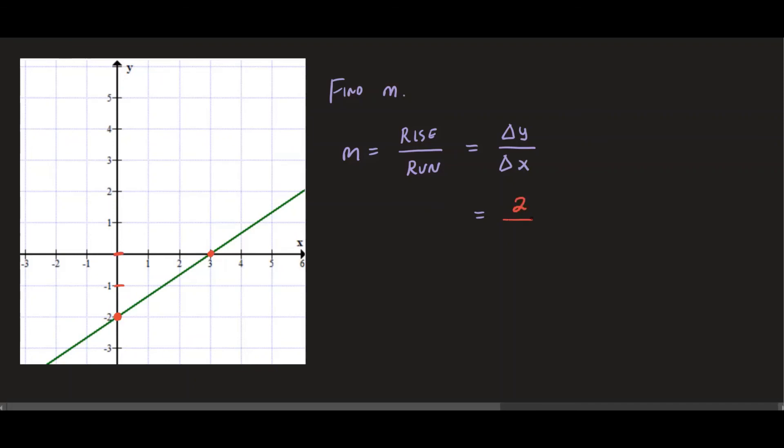So my rise happens to be going up. So that's two units positive. And now for run, I'm going to go from one, two, three. So what I have done, I have created a triangle to go from one point to the other. So my run happens to be on the right side. So that's also positive three. So m for this graph happens to be two over three positive slope.